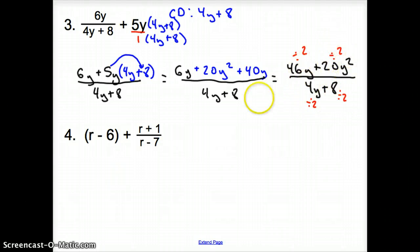Or, if you take a 2 out, you see that you can take a 2 out? Awesome. So, go ahead and do that to get 23y plus 10y squared. That all goes over 2y plus 4 for your simplified expression.